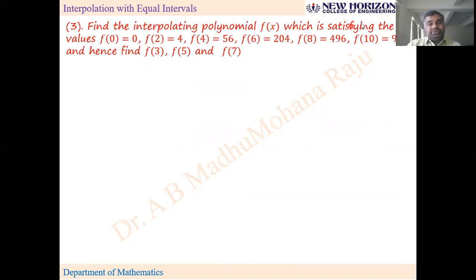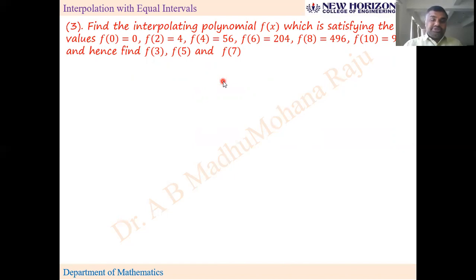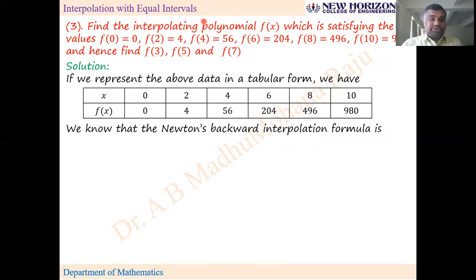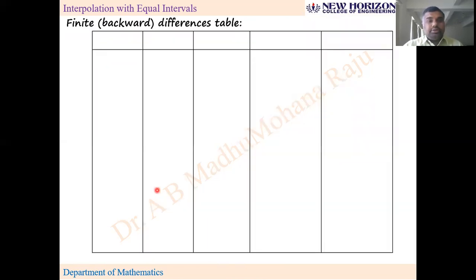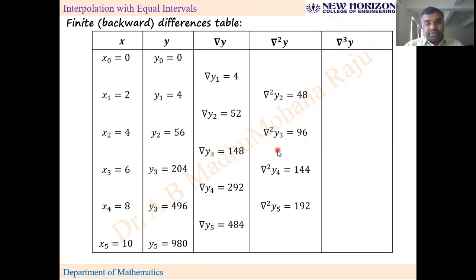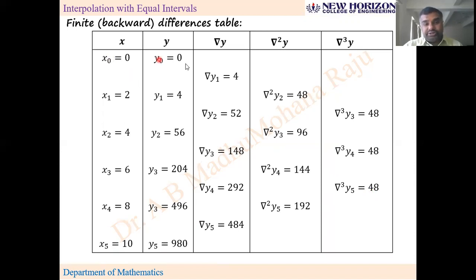Problem: find the interpolating polynomial f(x) satisfying f(0)=0, f(2)=4, f(4)=56, f(6)=204, f(8) and f(10) given. Then find f(3), f(5), and f(7). Since it also asks for a polynomial, we can use either forward or backward; here Newton's backward interpolation formula is used. The backward difference table is constructed with columns: x, y, Δy (∇y), Δ²y (∇²y), Δ³y (∇³y). For backward interpolation, only the down diagonal values are required.